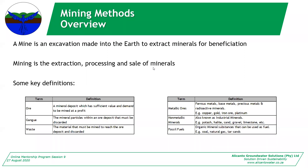A mine is the excavation made into the earth to extract minerals for beneficiation, and mining is the extraction, processing, and sale of minerals. Some key definitions in the mining industry — it has its own language almost. Key ones: ore is a mineral deposit which has sufficient value and demand to be mined at a profit. Gangue or gangue mineralogy is the mineral particles within an ore deposit that must be discarded — that's like the material in between your gold or platinum. Waste material is the material you have to go through to reach the ore deposit.